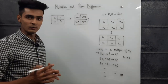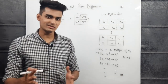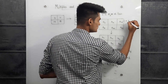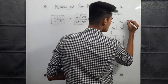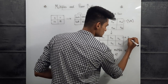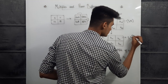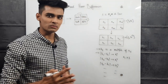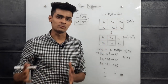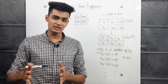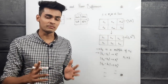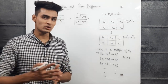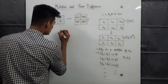Looking at the constraints: a_ij is in the range 1 to 16, and b_ij must be in the range 1 to 10^6. The key observation is that a_ij is very small. Since a_ij is small and b_ij must be a multiple of a_ij, let's find the LCM of all numbers from 1 to 16.